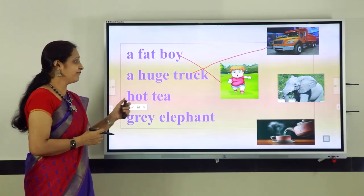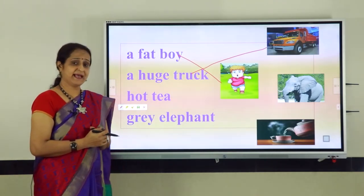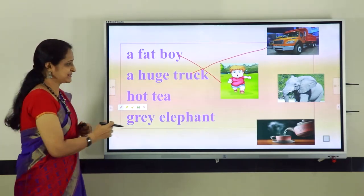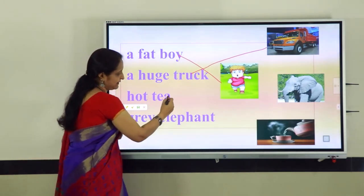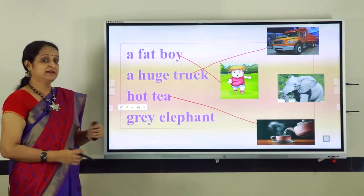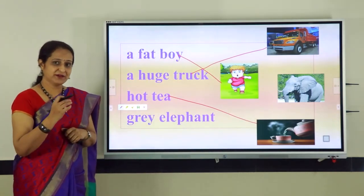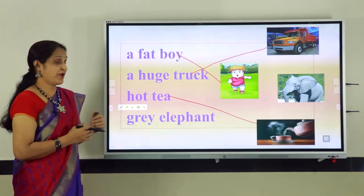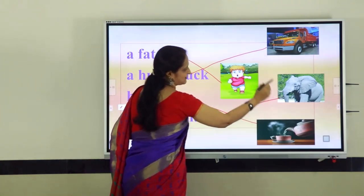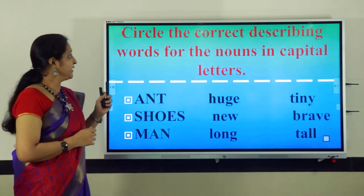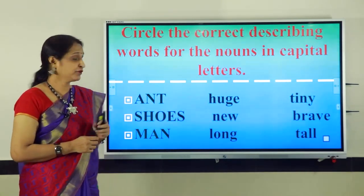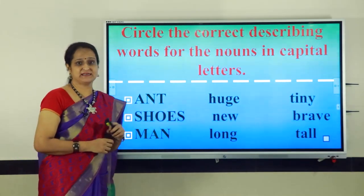Next we have: hot tea. Can you tell me which picture shows you hot tea? Yes, the last picture. Let us draw a line to match. The last set of words is: grey elephant. Where is the grey elephant in the picture? Yes. Now we are going to circle the correct describing words for the nouns given in capital letters.